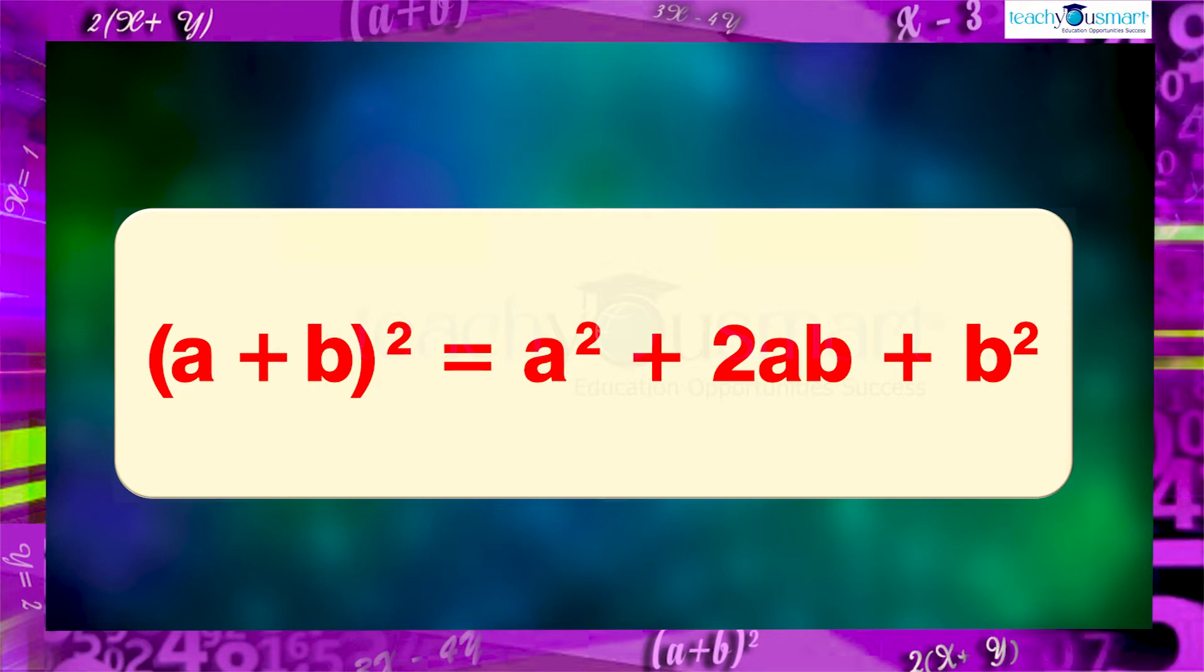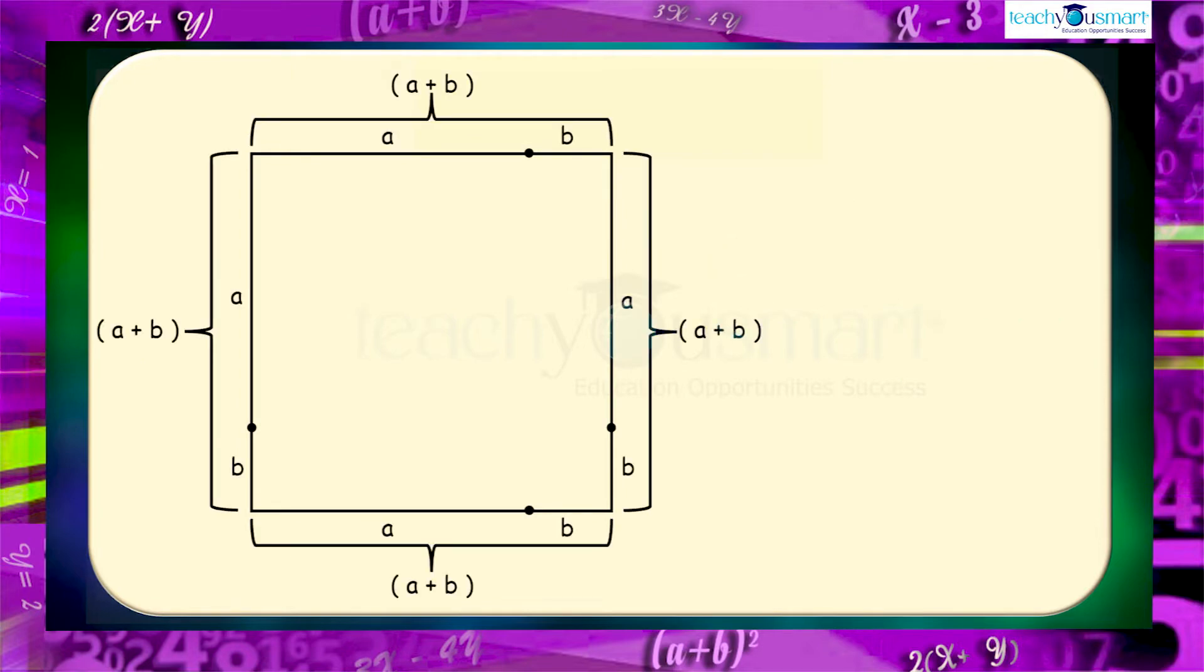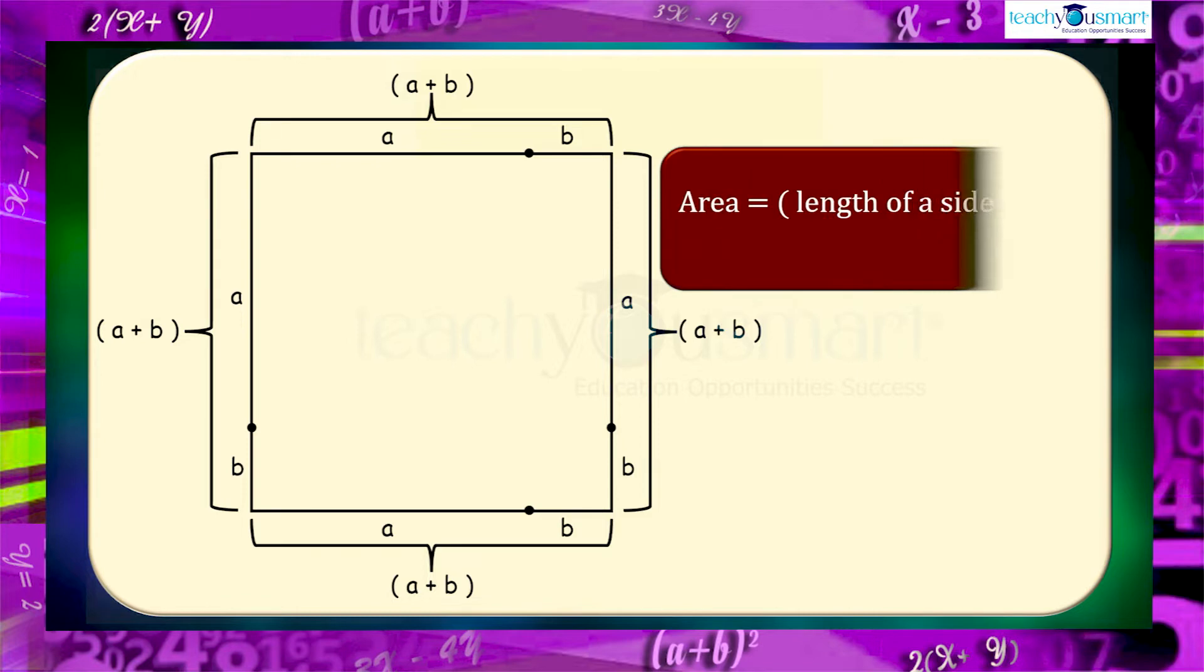Take a square with side a+b. What is its area? Area equals the length of a side whole square, which equals (a+b)².